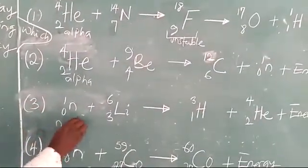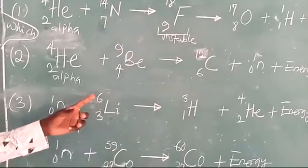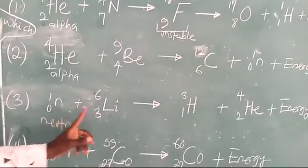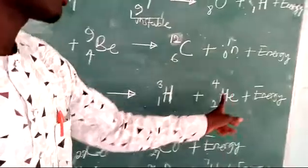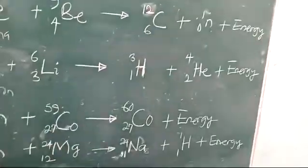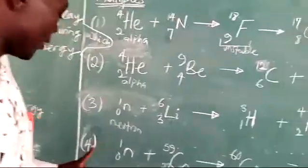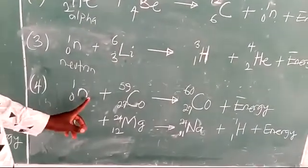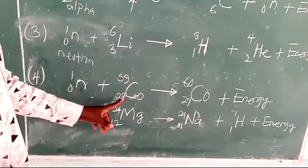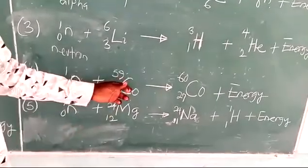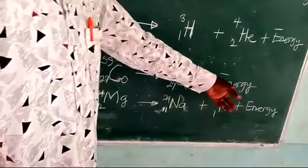The third one: a neutron is used. A fast-moving neutron is used to attack the nucleus of lithium with a mass of 6 and atomic number 3. When it is attacked, it splits and gives us this isotope of hydrogen, deuterium, plus an alpha particle, and then energy is released to the surrounding. All these are artificial processes — man-made processes, they do not occur naturally. Fourth, a neutron is used to attack the nucleus of cobalt with a mass of 59 and atomic number 27. When bombarded with a neutron, it yields another isotope of cobalt, which is cobalt-60, and then energy is released in the process.